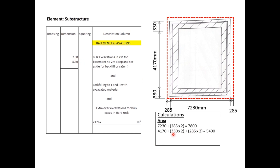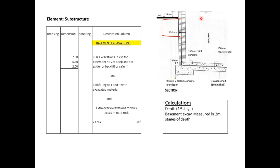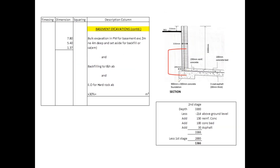The vertical dimension is 4170 plus 330 times 2, plus 285 times 2, giving us 5.4 meters. As the excavation depth exceeds 2 meters, we calculate it in two stages. The first stage is 7.8 by 5.4 by 2 meters. For the second stage, the area dimensions remain the same but the depth changes. The description changes from not exceeding 2 meters to exceeding 2 meters and not exceeding 4 meters, because we excavate in 2 meter stages.